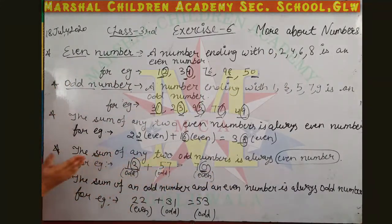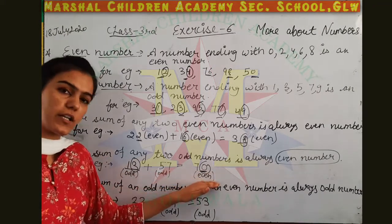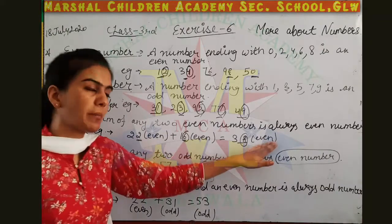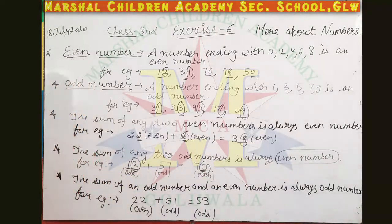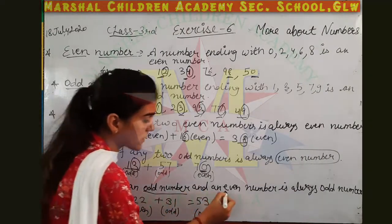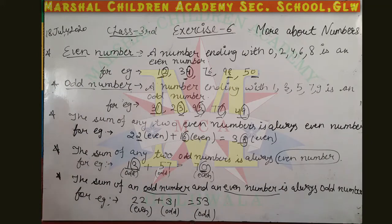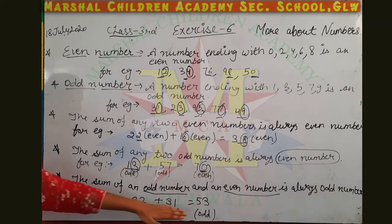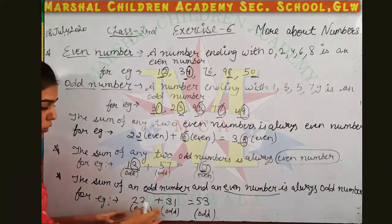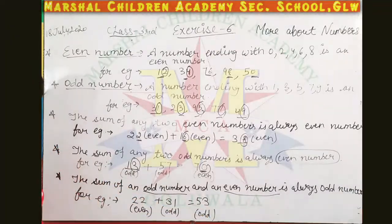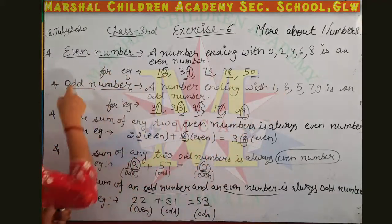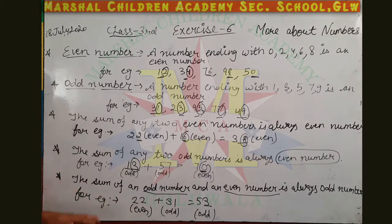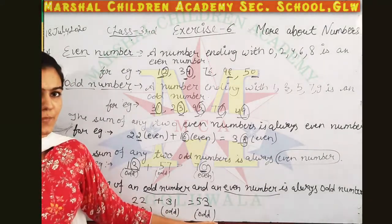That means if we add two odd numbers, the answer will be an even number. And if we add one even number and one odd number — for example, 22 is an even number and 31 is an odd number — 22 plus 31 gives an odd number. So if we add an even and an odd number, the answer will be an odd number.